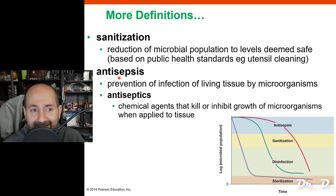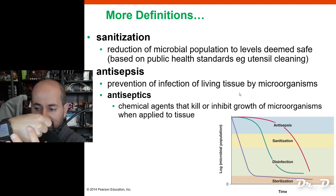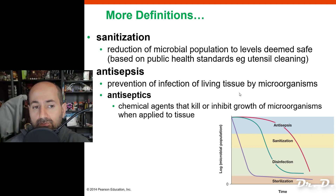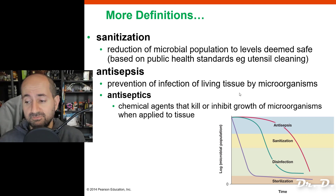Antisepsis is when you prevent infection of living tissue by microorganisms. This is when you're dealing with living tissue — for example, if you have a cut and you treat it with a chemical to help prevent microorganisms from growing on your skin, that would be antisepsis. Mouthwash is an example of an antiseptic.